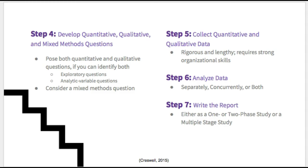Step 5 is the most lengthy and rigorous as it is collecting all of your data. Depending on the design of the study, the sequence in which you need to collect data will vary. To enhance your storage, management, and recording of data, heavily consider utilizing statistical programs and text analysis programs. Step 6 is analyzing your data. Again, depending on your design will determine the process in which you analyze your data. You may need to view the quantitative and qualitative data separately — as in explanatory or exploratory designs — or together, as seen in a convergent design.